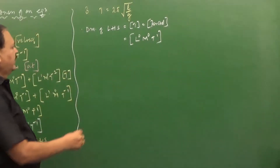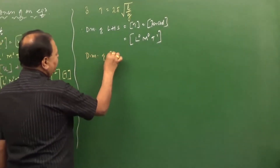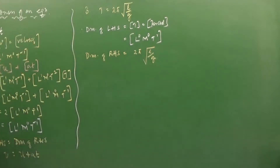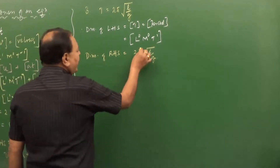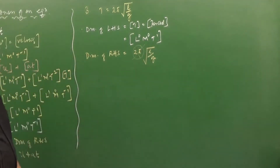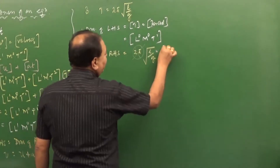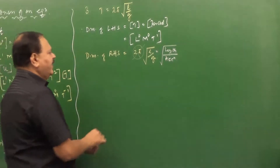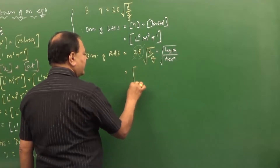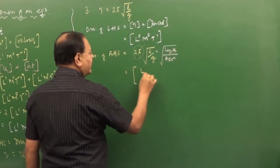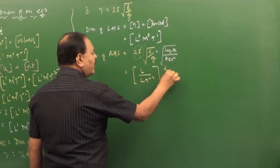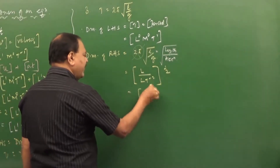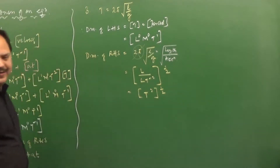Now take the dimension of the RHS. The dimension of RHS is equal to 2π into root of L by G. The constant 2π has no dimension. G is acceleration due to gravity, so its dimension is L¹T⁻². We have length L in the numerator and acceleration L T⁻² in the denominator. L cancels with L, and the square bracket power is half — so root means power of half.